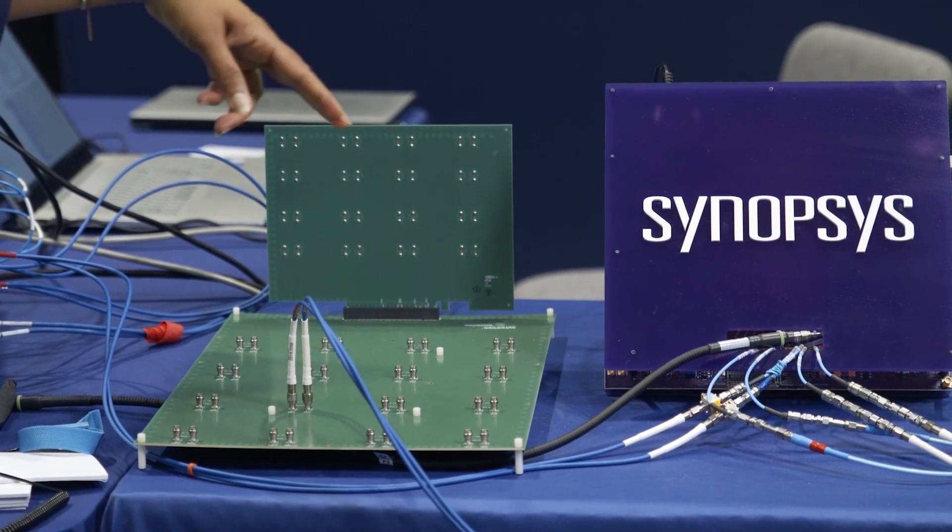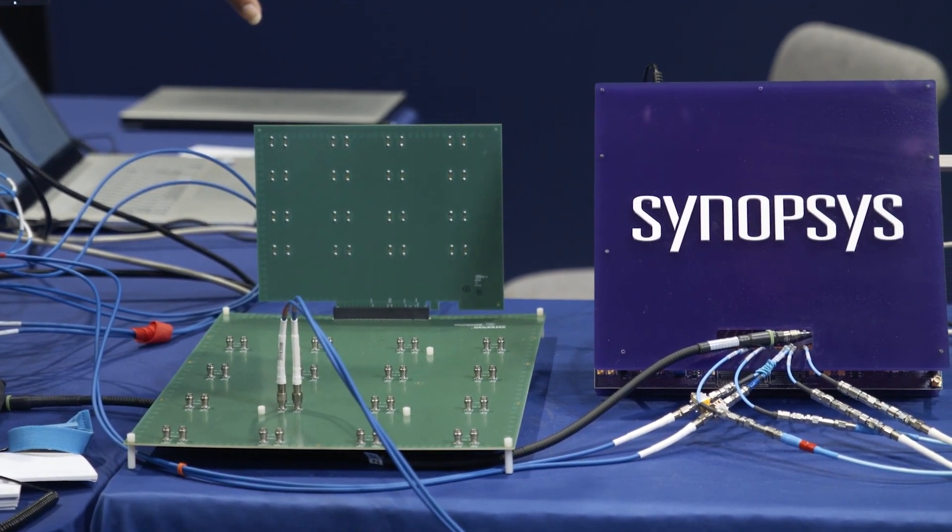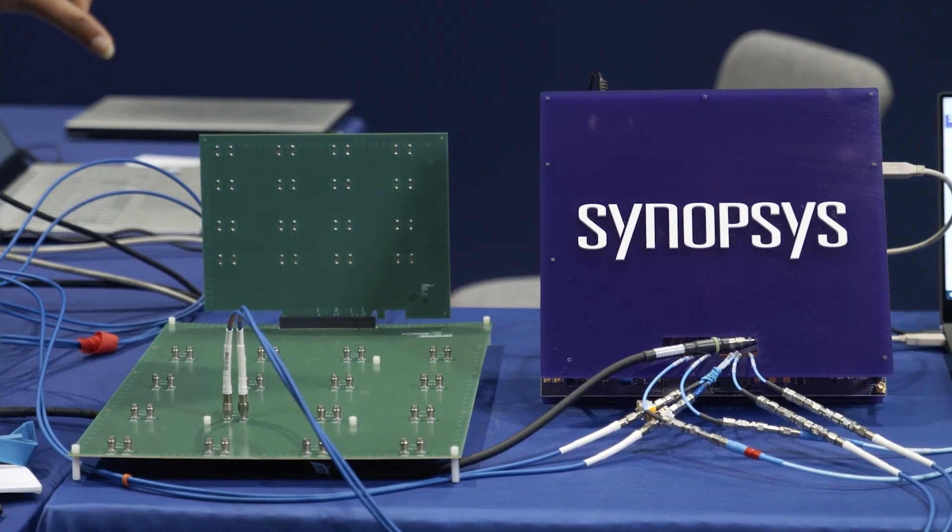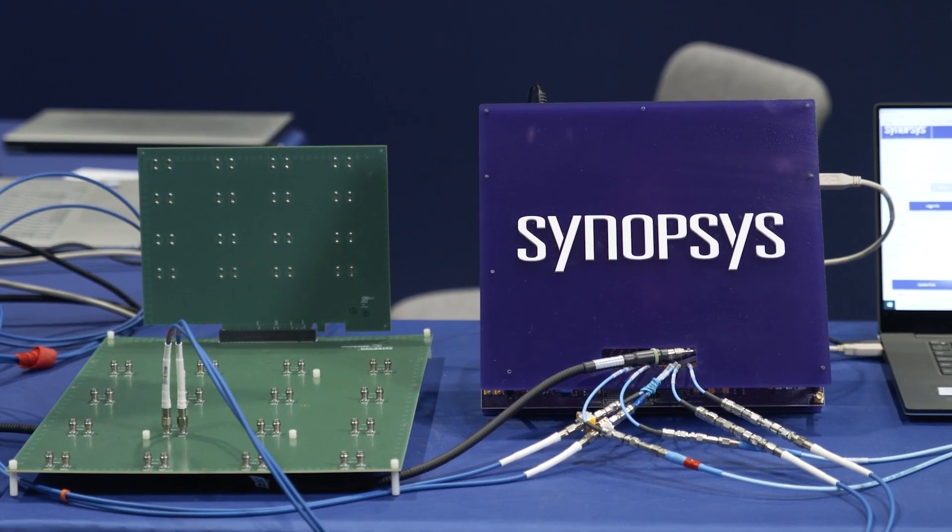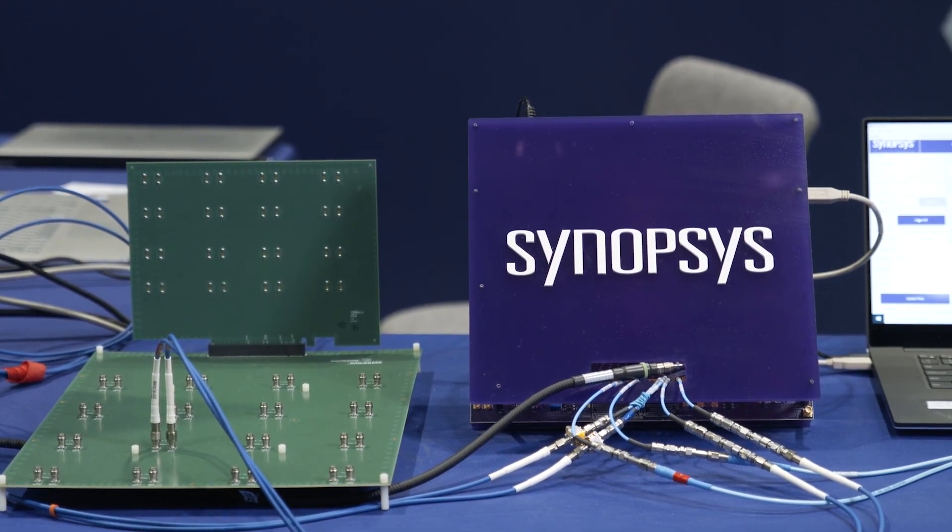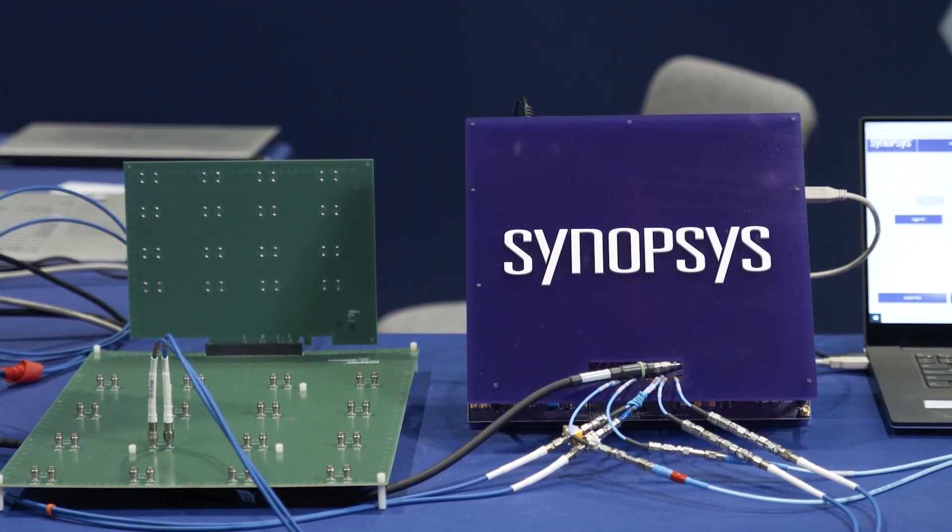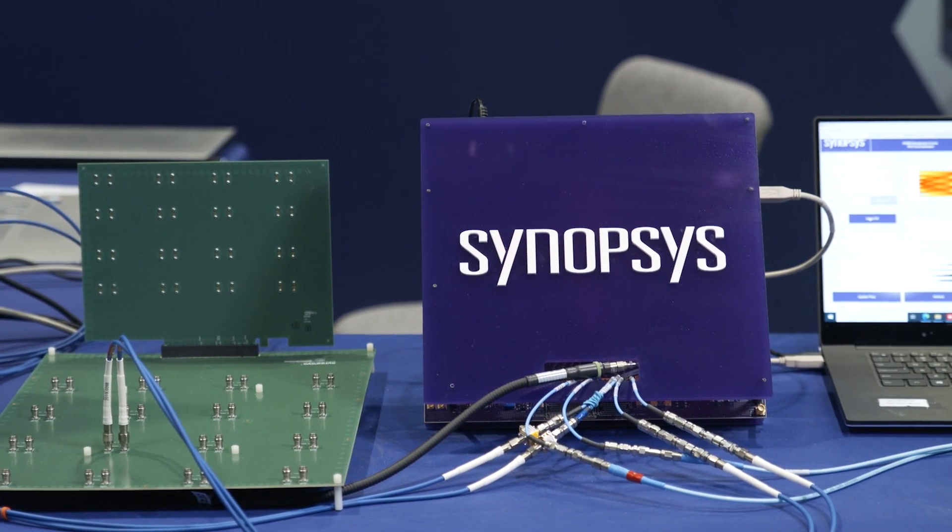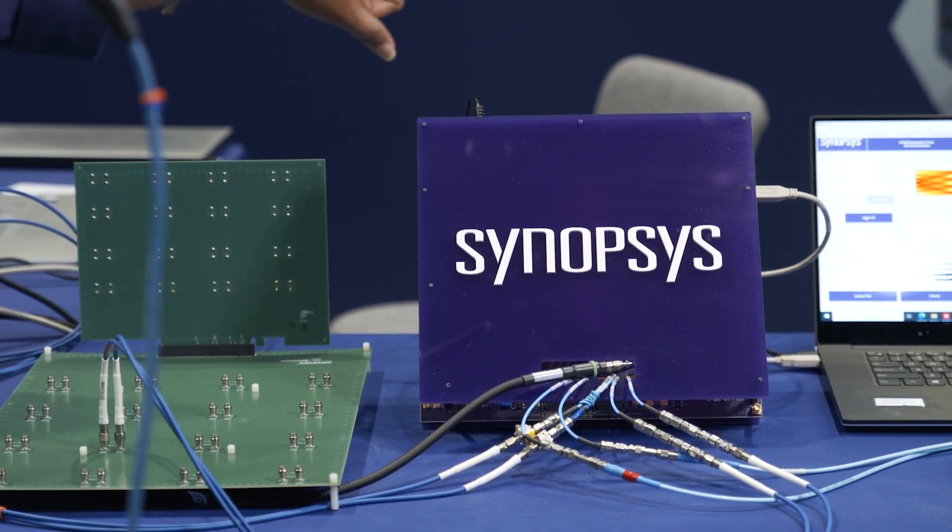It's going to the PHY Gen 6 silicon proven evaluation board. The board is located under this blue header. The receiver is equalizing the whole channel and it is getting stressed by the pattern and with the jitter that I just mentioned before.